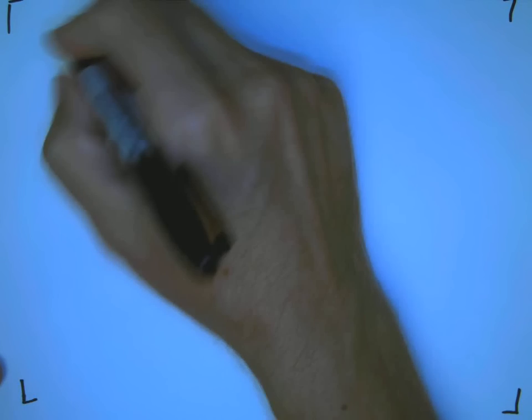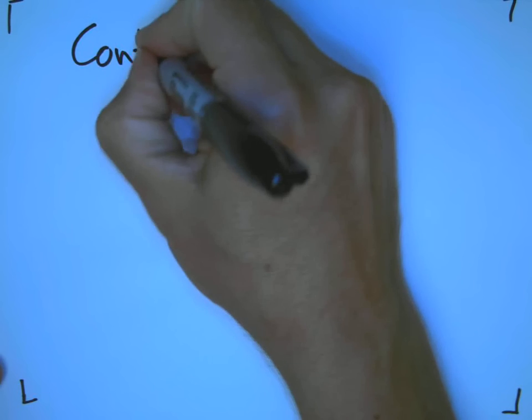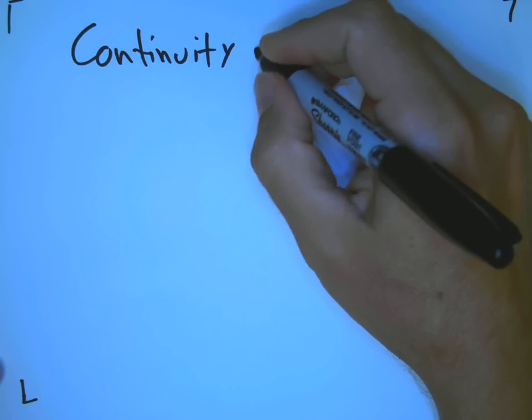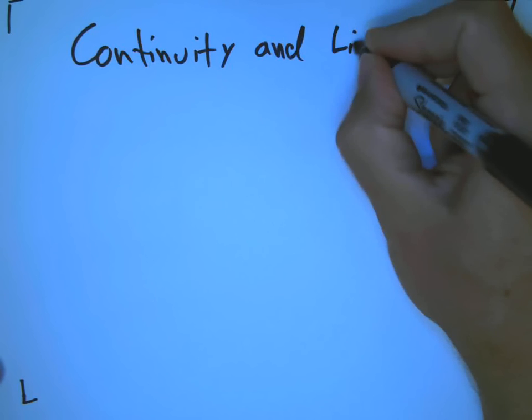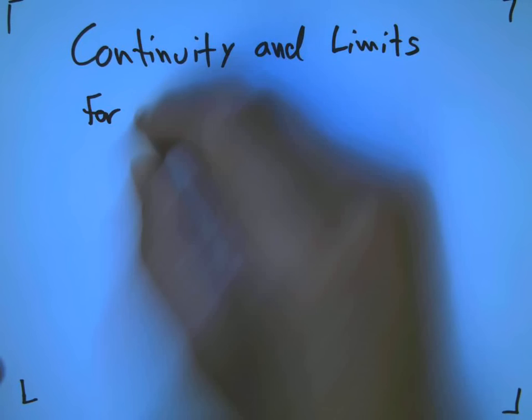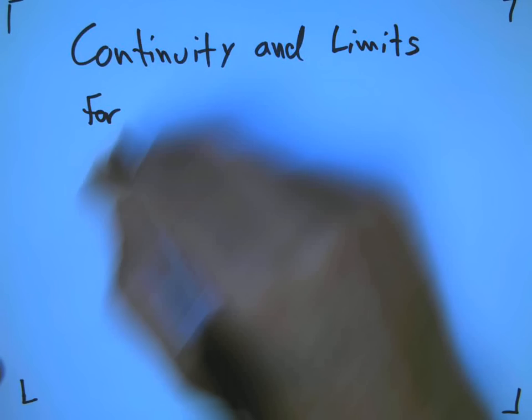Okay, let's talk about continuity and limits for piecewise functions. I want to do some examples here because the book doesn't go into a lot of detail and they don't have a really explicit example.